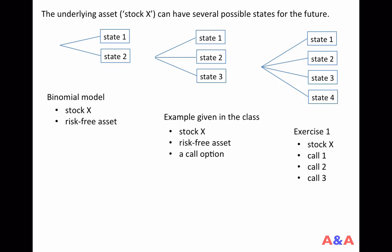In this class we study a multi-period binomial tree model for option pricing, but before that let me start with some background. Our interest is to find the theoretical prices implied by the no-arbitrage pricing theory of call options and put options, and our setting is that the underlying asset — let's say the stock of company X — can have several possible states for the future.